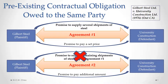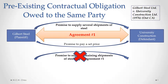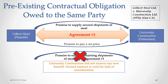The court found that the promise to supply the remaining shipments under agreement number two was not valid consideration, because that promise had already been made under agreement number one, and University Construction did not receive any new benefit from that promise to supply the remaining shipments. Therefore, that second contract, agreement number two, is void for lack of consideration.